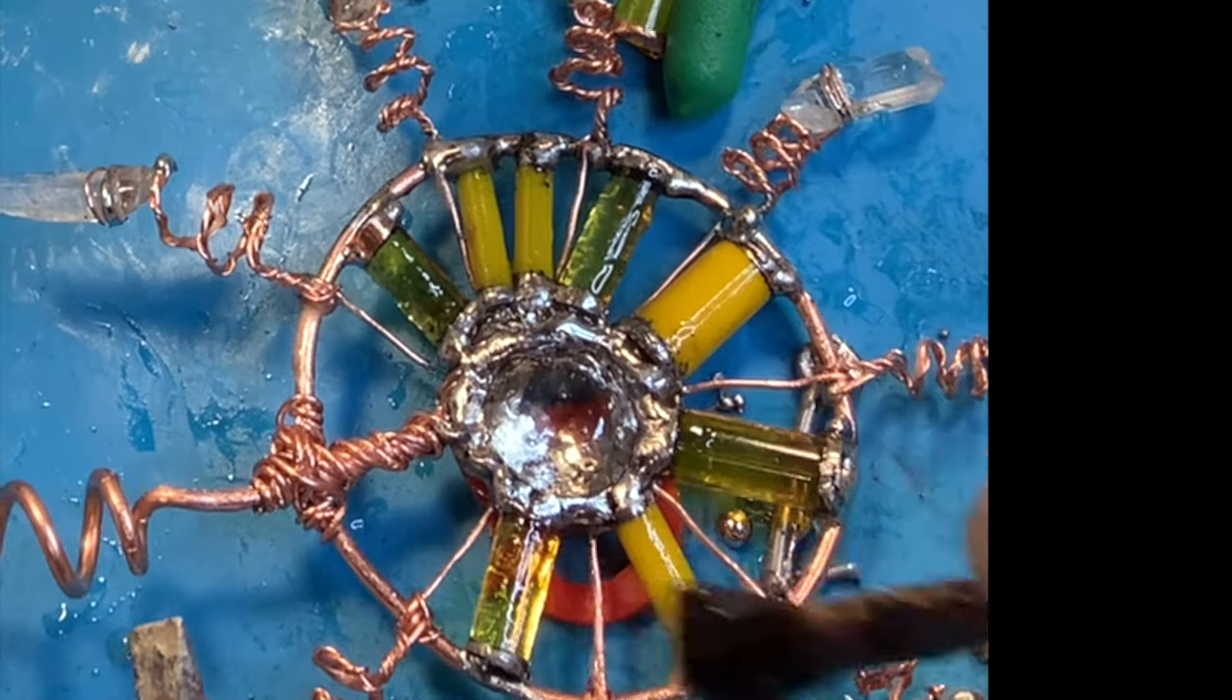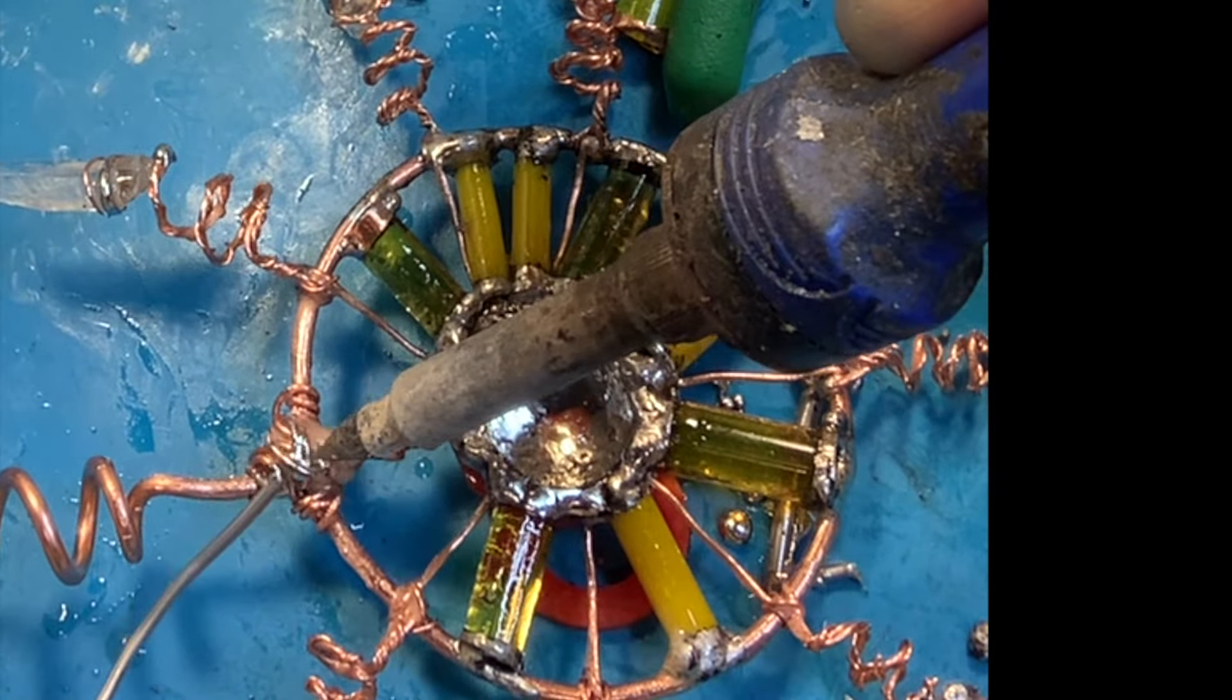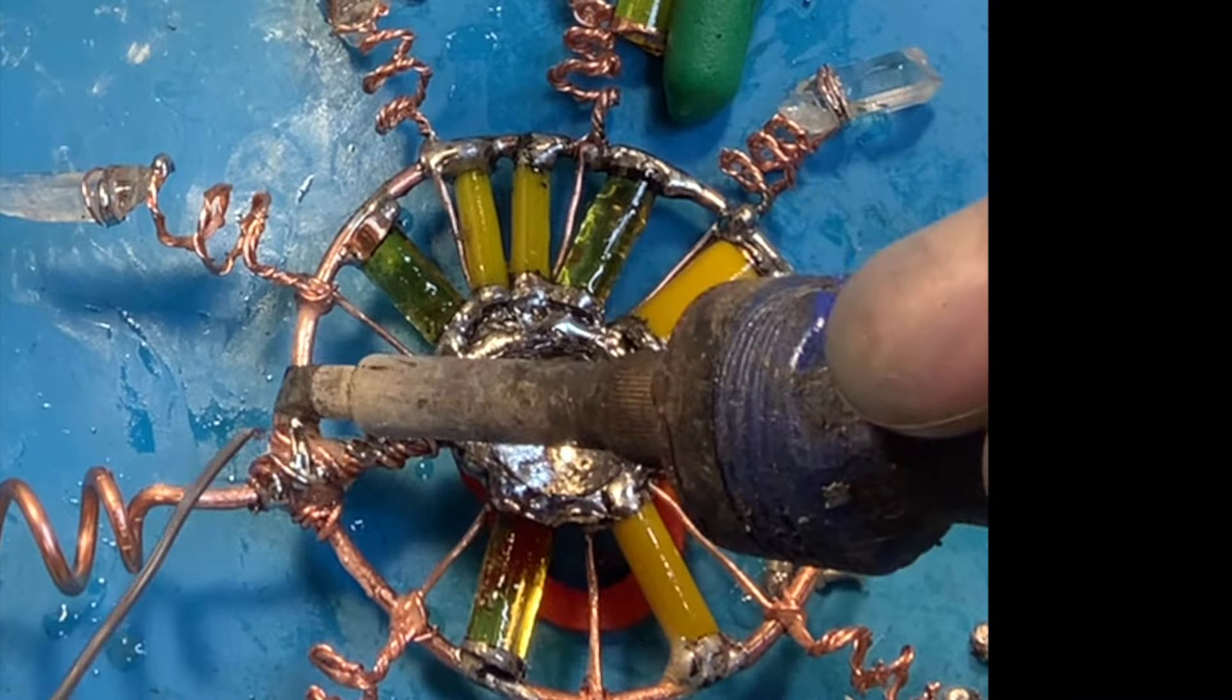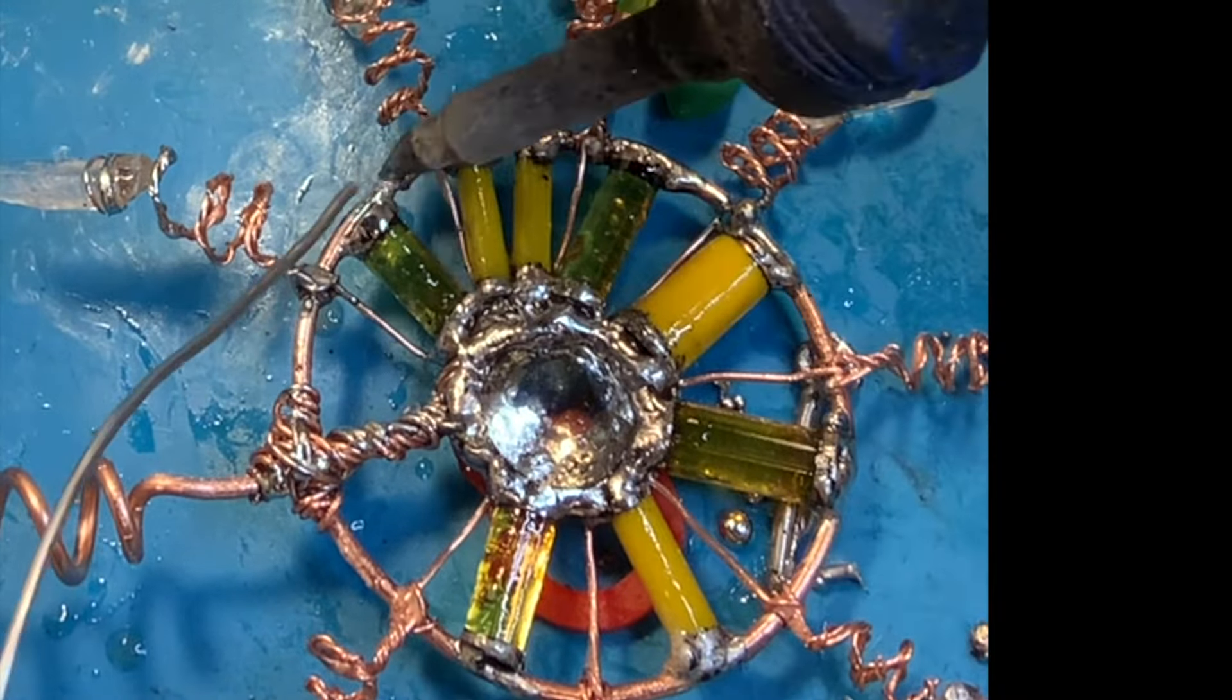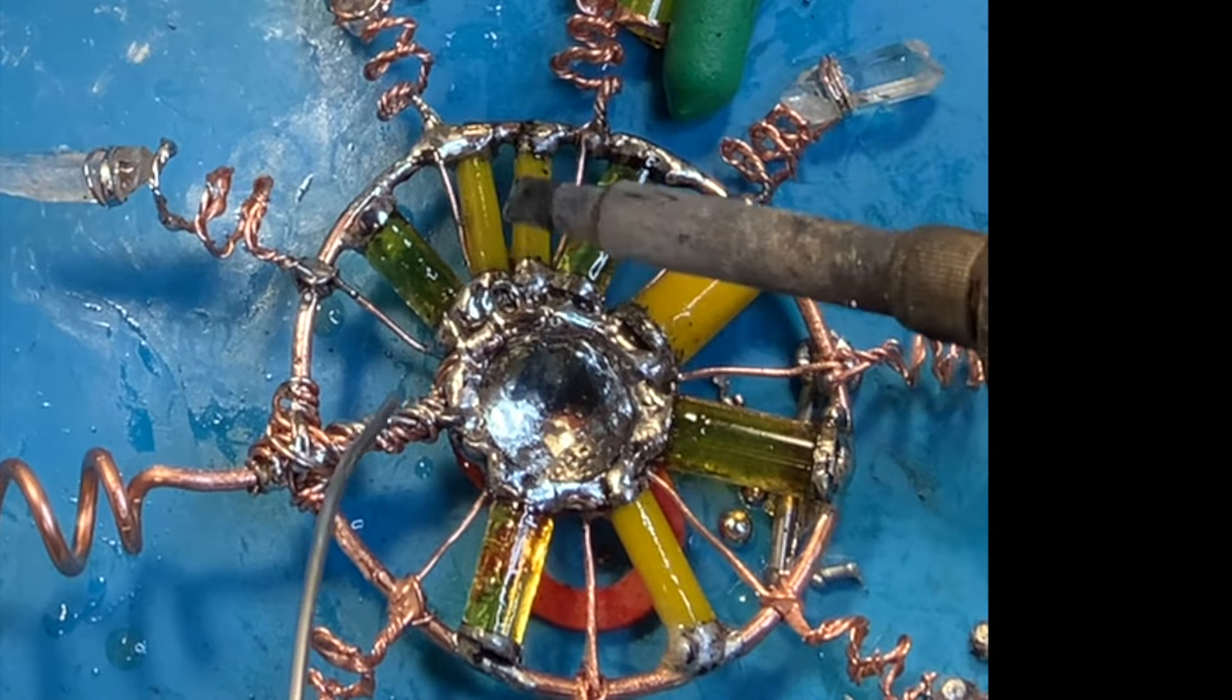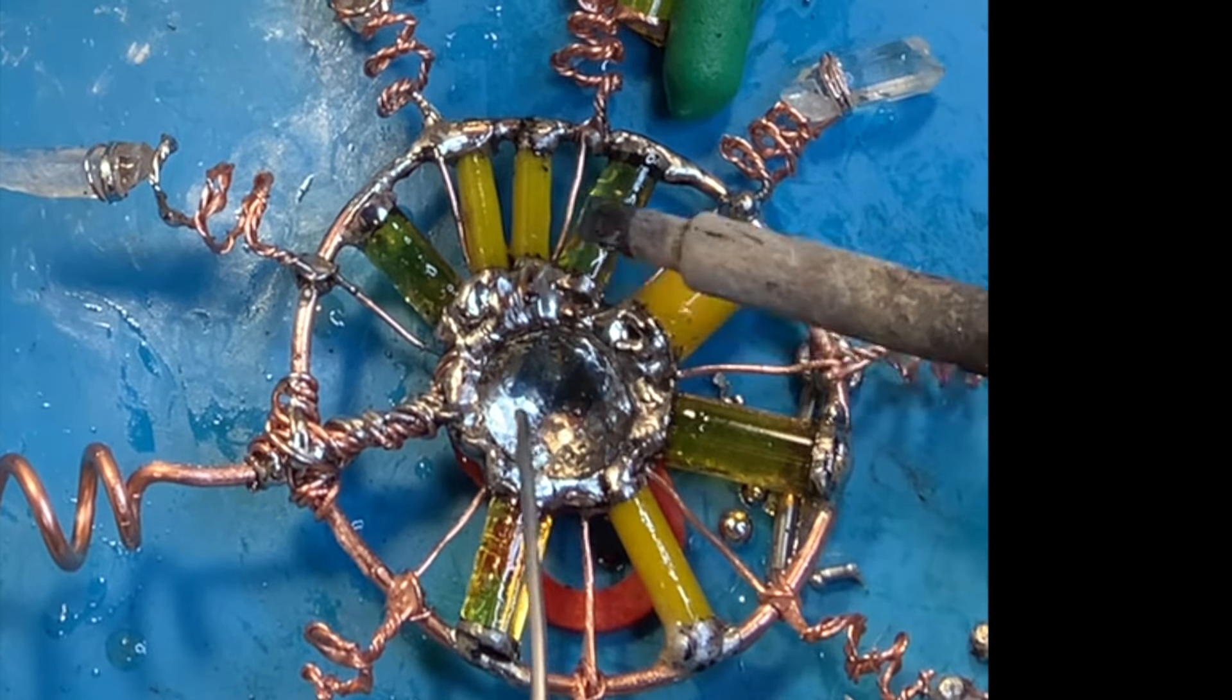Some of my gardening coils do not have any solder on them at all. This one just happens to have solder because of the way I wanted to add those rods to it. The solder is conductive, so electricity will go through solder, so it shouldn't really affect the transfer of energy from the sun.